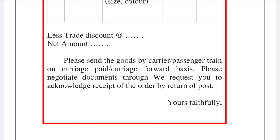'Please negotiate documents through...' — you write the bank name. 'We request you to acknowledge receipt of this order by return of post.' If you have bank documents, you include the bank and check details. If you have a card number, you can include the order details. The final element before the complimentary close is the last paragraph acknowledging receipt.